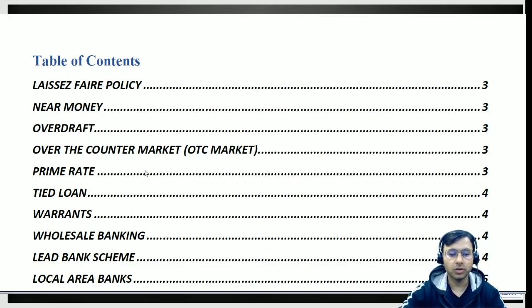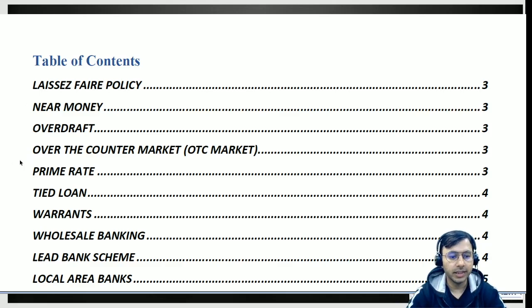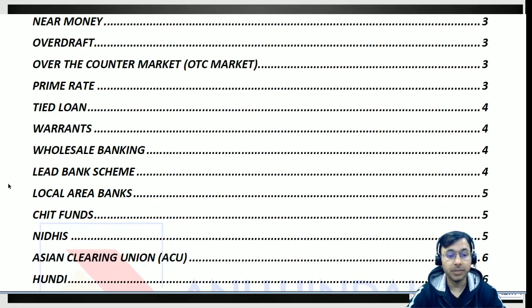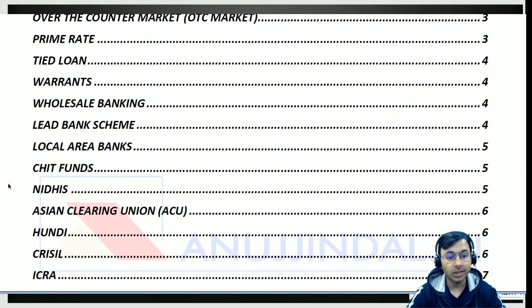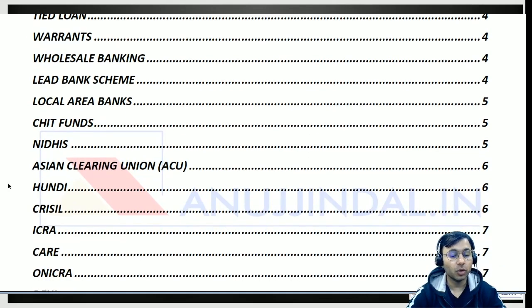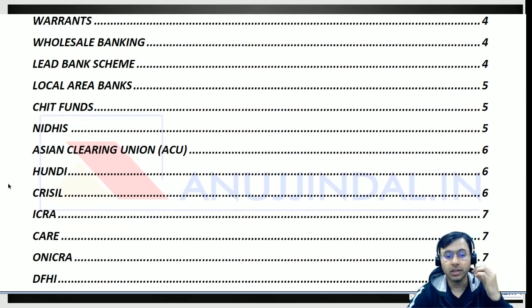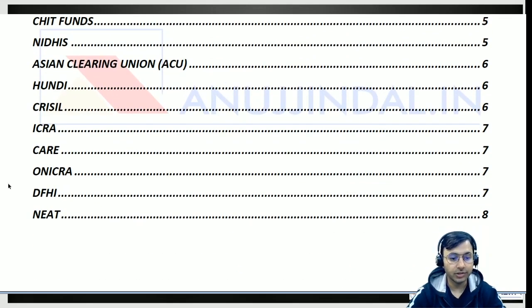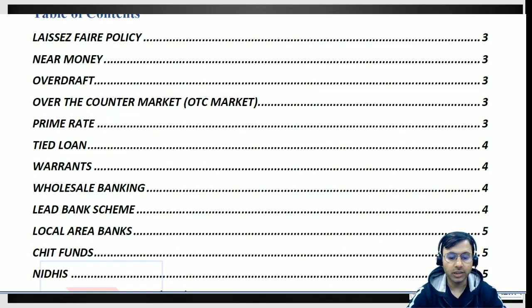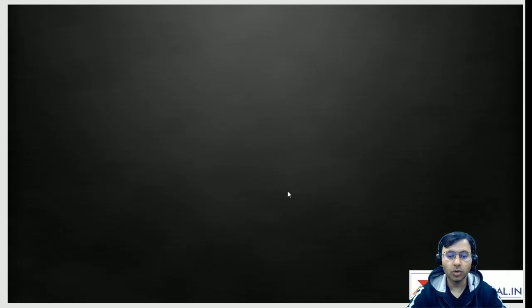Let me take you through the contents table so you'll be able to understand what we are going to cover today. The first one is laissez-faire policy, then near money, overdraft, OTC market, what exactly is OTC market and what differentiates it from an exchange-traded market, what's the prime rate, technically BPLR benchmark prime lending rate, tied loan, warrants, wholesale banking, how it's different from retail banking — a very favourite question of the interview board — lead bank scheme, local area banks, chit funds, nidhis, Asian Clearing Union, hundi, CRISIL, ICRA, CARE — all these are rating agencies — ONICRA, DFHI, and NEAT and how it is connected with BOLT that we've already covered.